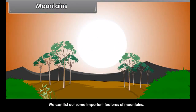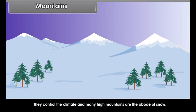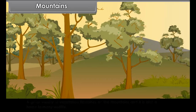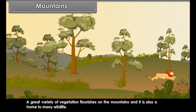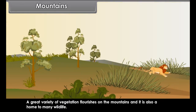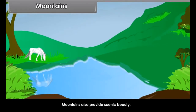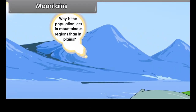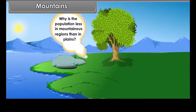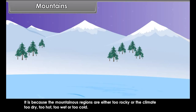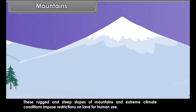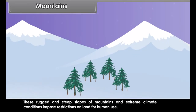Mountains. Some important features of mountains: they control the climate and many high mountains are the abode of snow. A great variety of vegetation flourishes on the mountains and it is also home to many wildlife. Mountains also provide scenic beauty. The population is less in mountainous regions than in plains because the mountainous regions are either too rocky, or the climate is too dry, too hot, too wet or too cold. These rugged and steep slopes and extreme climate conditions impose restrictions on land for human use.